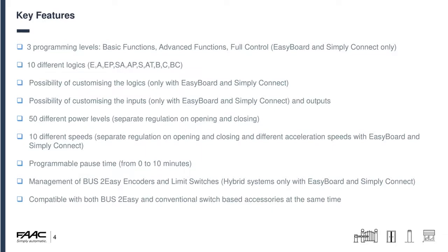The key features include three programming levels: basic functions, advanced functions, and full control via EasyBoard and Simply Connect. There are 10 different logics and all those logics can be customised. You've got 50 different power levels with different regulation for opening and closing, and 10 different speeds. The board uses bus-to-easy encoders and limit switches, supports hybrid systems via EasyBoard — for example limit switch on one side and encoder on the other — and is compatible with all bus-to-easy devices and accessories simultaneously with normally-closed relay contact accessories.